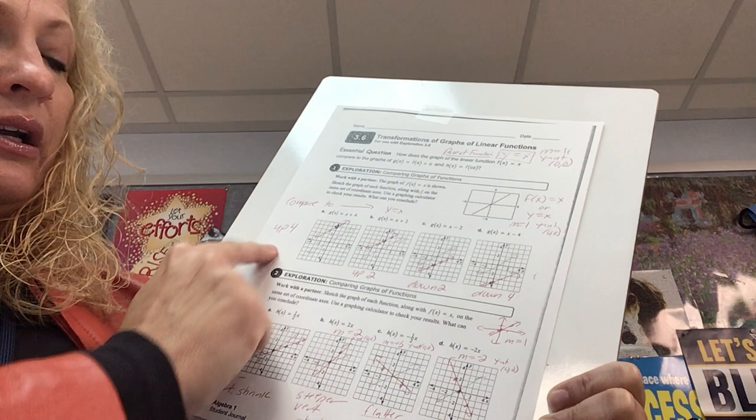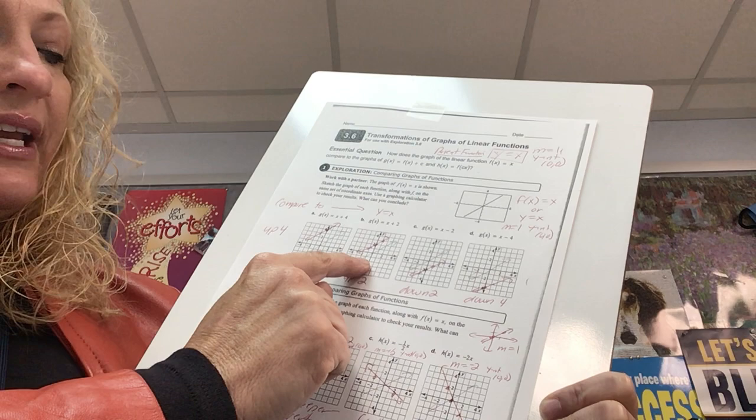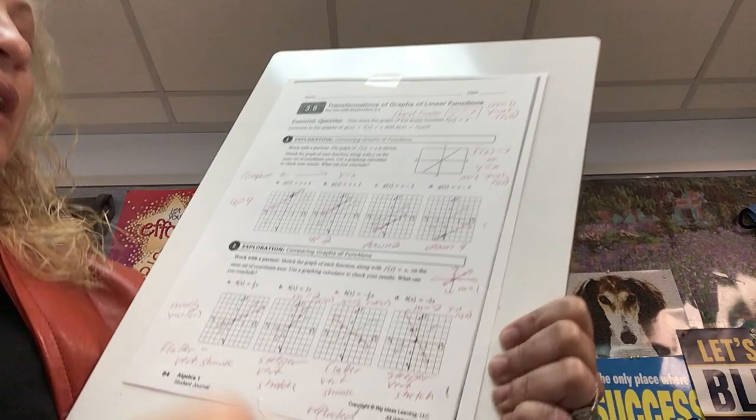Let's go to this equation — y-intercept of 0, 2, slope of 1. Starting at 0, 2: up 1, right 1. Here's the parent graph sketched in. How did the red change from the parent graph? It moved up 2.